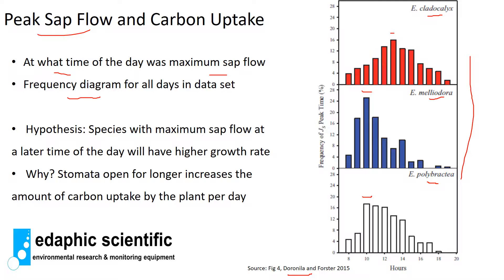Even though most plants have their peak sap flow in the middle of the day, when you look at the data in more detail you find these different peaks. We can use that information to work out what's going on with plant physiology. For example, if Eucalyptus cladocalyx keeps its stomata open until 1 pm while meliodora and polybractea close theirs at 10 or 11 am, the latter species are taking up less CO2, meaning lower photosynthesis and potentially lower growth rates and yield.